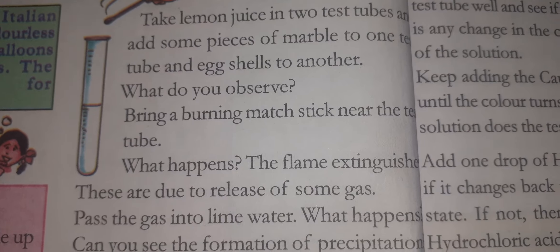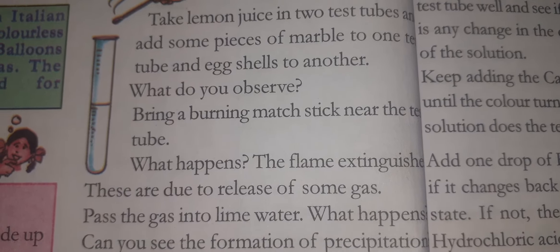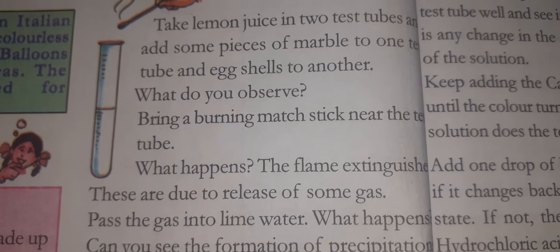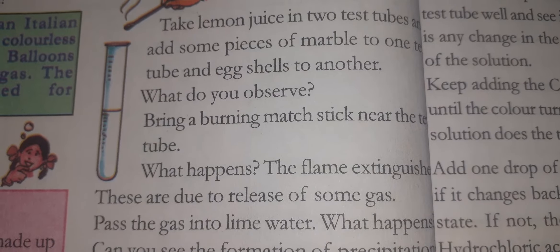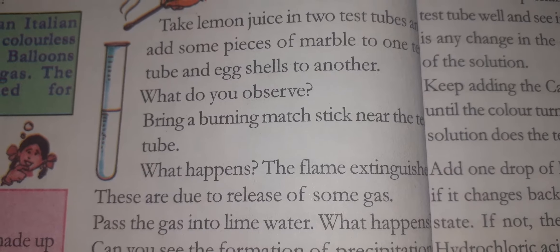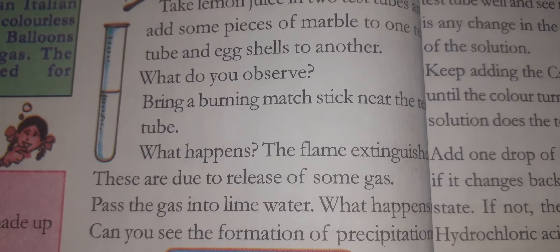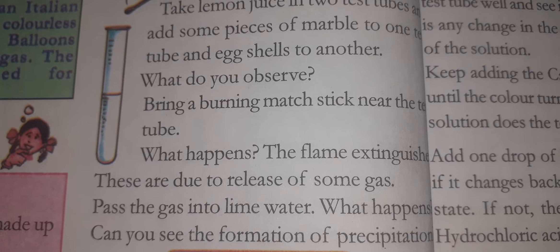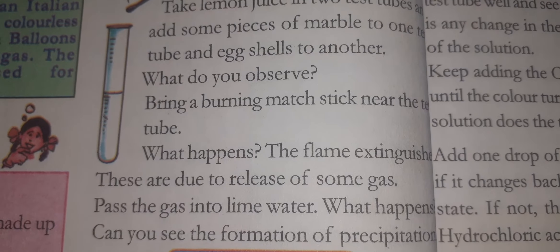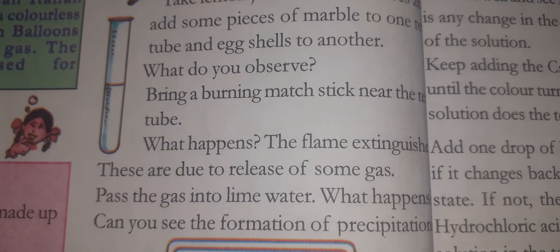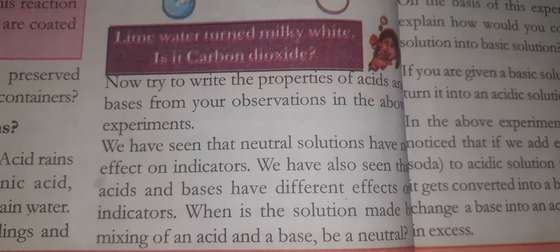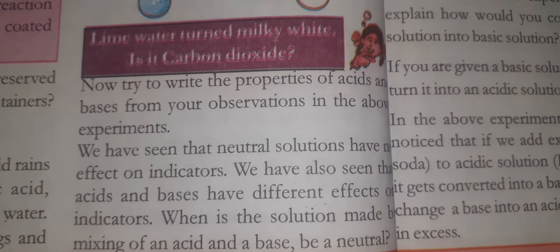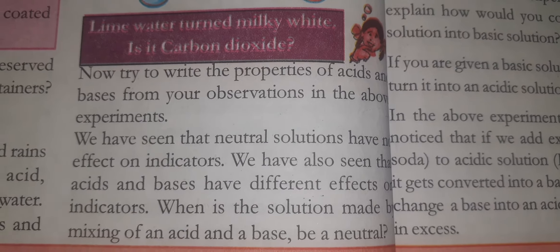When we bring a burning splint near the test tube, the flame will be extinguished. This is due to the release of some gases. Afterwards, we have to pass these gases into lime water and observe what happens — you will see the formation of a precipitate.